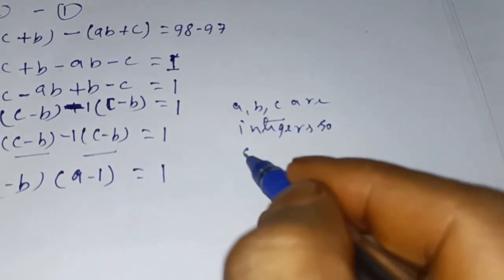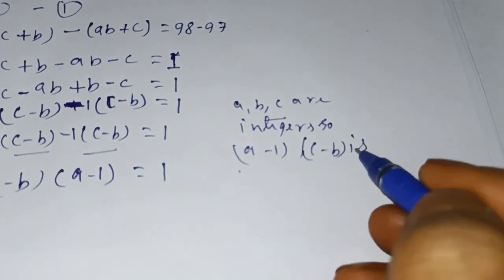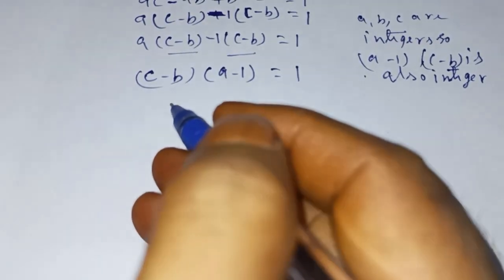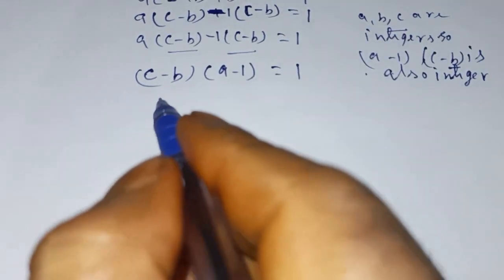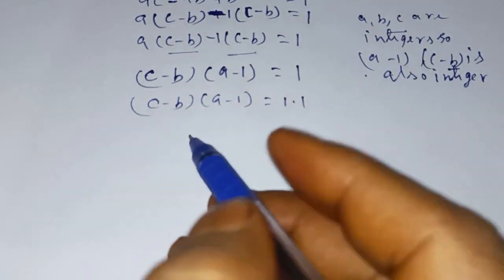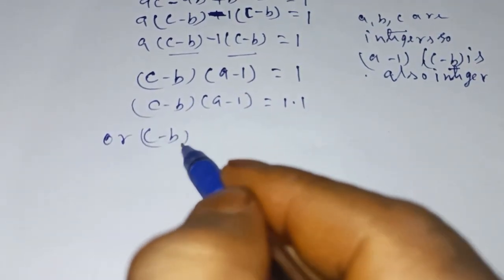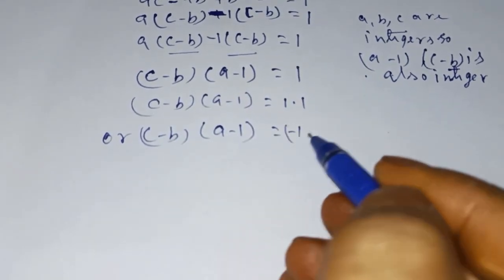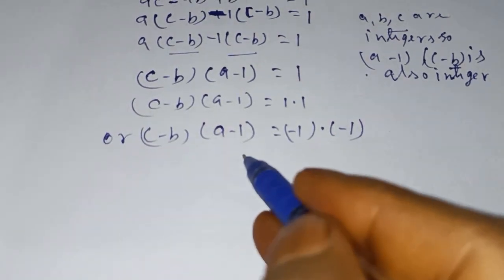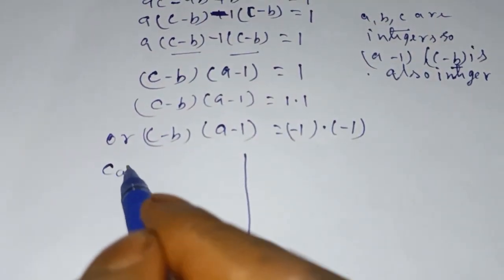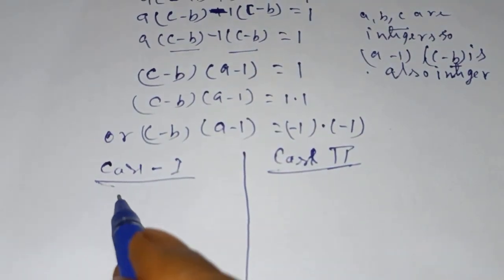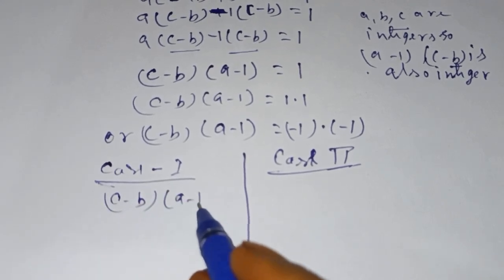Since a, b, c are integers, (c minus b) and (a minus 1) are also integers. So we can write this as (c minus b)(a minus 1) = 1×1, or (c minus b)(a minus 1) = (minus 1)×(minus 1). There are two possible cases.